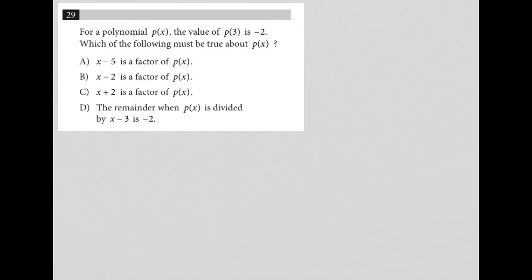So this question says, for a polynomial P of X, the value of P of 3 is negative 2. I'm just going to underline that. Which of the following must be true? That's also important. Anytime I see the words must be true on this test, that lets me know that there's probably multiple correct answers, but only one of them has to always work versus the others that may be just situational.